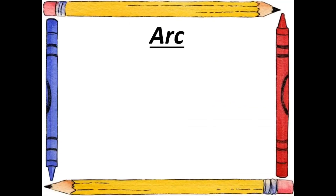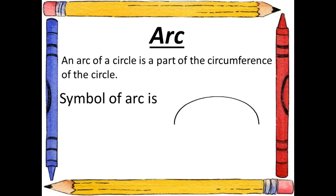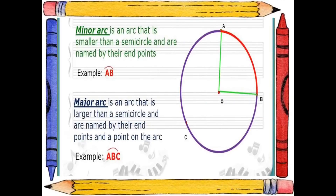An arc of a circle is a part of the circumference of the circle. Arc is of two types. A minor arc is an arc that is smaller than a semicircle and is named by its endpoints — in the figure, AB is a minor arc. A major arc is an arc that is larger than a semicircle, named by its endpoints and a point on the arc — here, ACB is a major arc.